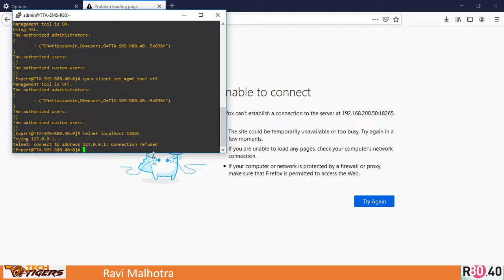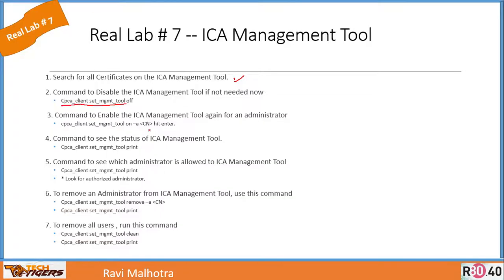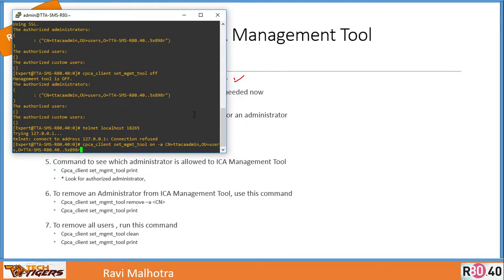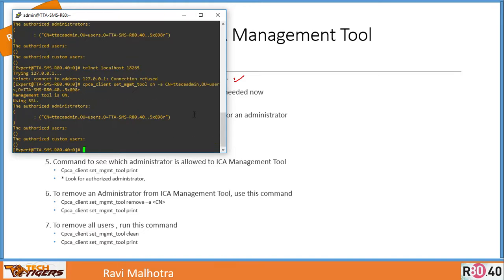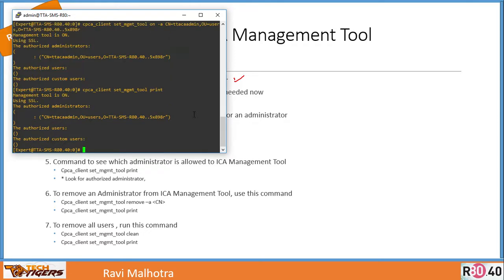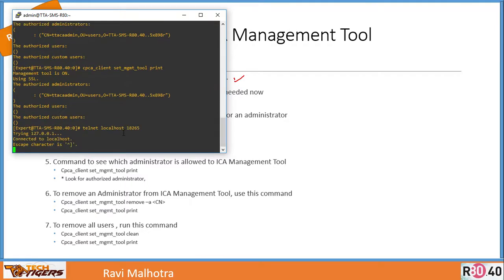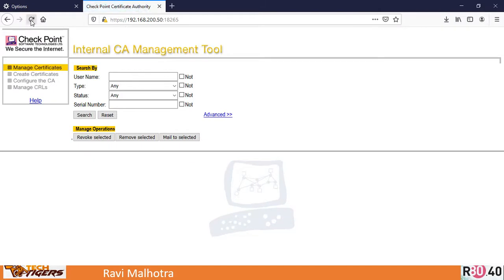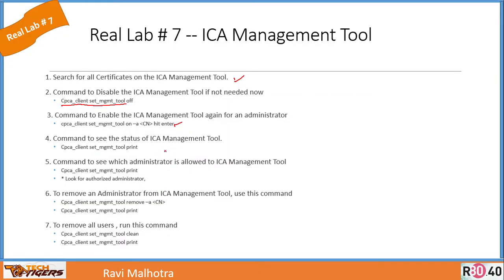Running 'telnet localhost 18265' confirms connection refused. To re-enable the ICA management tool for an administrator, run the enable command again with the CN: 'cpca_client set_management_tool on -a' and the CN. Then run 'cpca_client set_management_tool print' — it shows management tool is on and using SSL. Running telnet confirms the connection is restored, and you can connect via browser again.